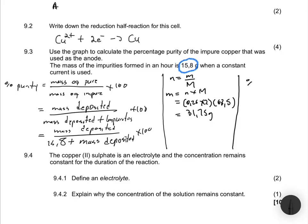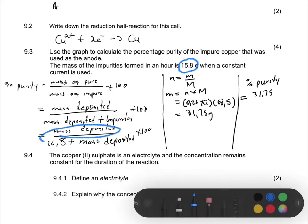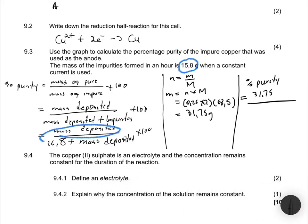The percentage purity equals 31.75 (mass deposited) divided by (15.8 + 31.75) (impurities plus mass deposited), multiplied by 100. Entering this into the calculator gives 66.67%.